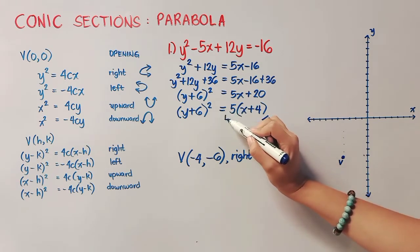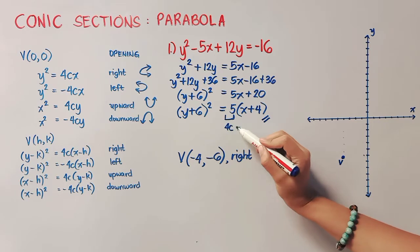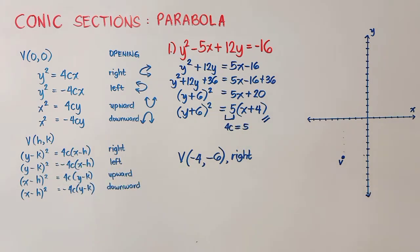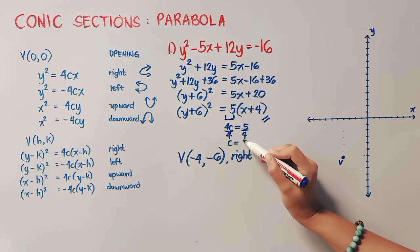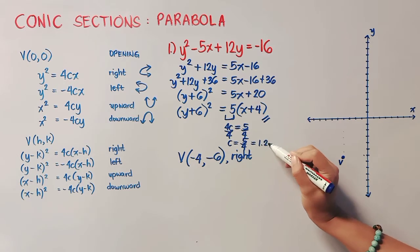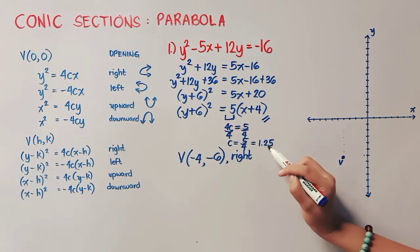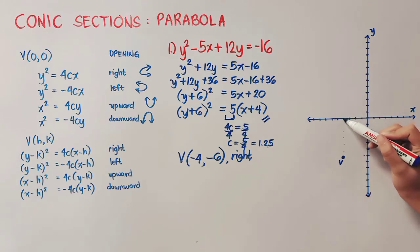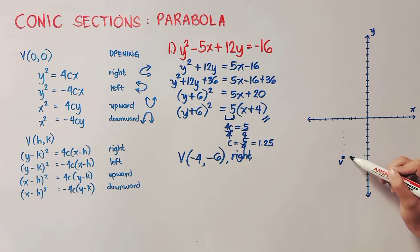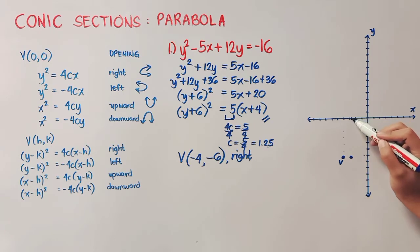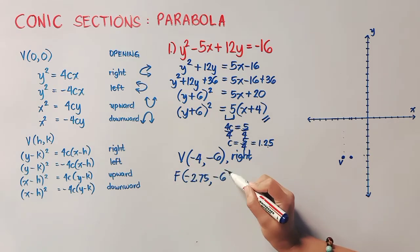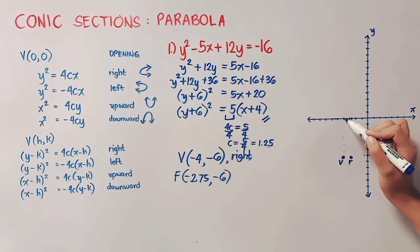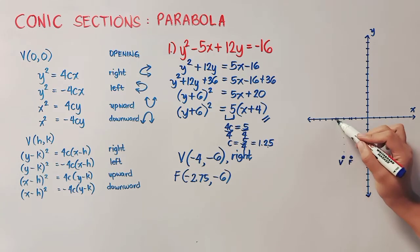Now this portion here is our 4c, which is equal to 5. As you can see in the form. So we will divide both sides by 4. Therefore, our c is 5 over 4 or in decimal, that is 1.25. So from the vertex, we will count 1.25 units to the right. So that is from here, 1.25. Our focus is this point. And that point is negative 2.75, negative 6.